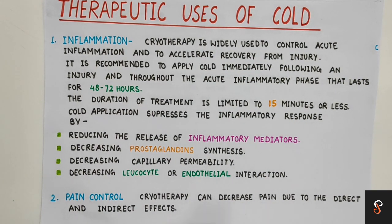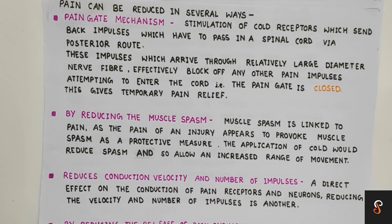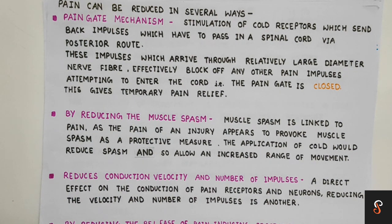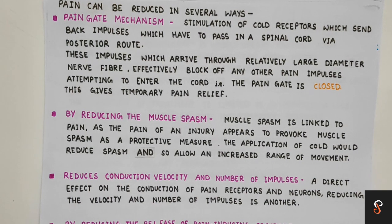Second is pain control. Cold reduces pain in many ways. First is the pain gate mechanism: on application of cryotherapy, cold receptors are stimulated, sending impulses through the spinal cord via the posterior root. When these impulses arrive through large-diameter nerves, they block out other pain impulses, closing the pain gate and resulting in temporary pain relief. Next, cold reduces muscle spasms — involuntary contractions that are painful — which increases range of motion. It also reduces nerve conduction velocity and number of impulses, and decreases pain by reducing release of pain-inducing irritants like prostaglandins and bradykinins.